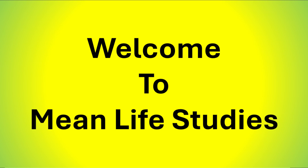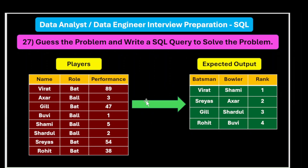Hello everyone, welcome to Mean Life Studies. In this video we are going to solve one more SQL problem as part of data analyst or data engineer interview preparation. This is question number 27 — it's not a direct question; we need to guess the problem and write a SQL query to solve it. We are given an input table called 'players' and an expected output.